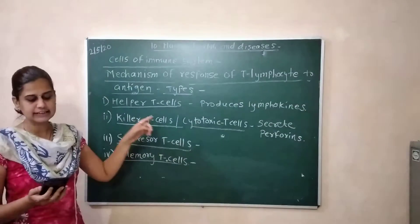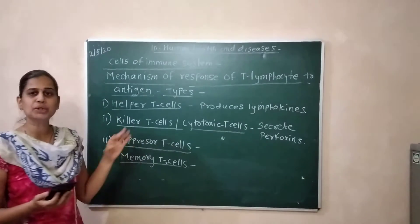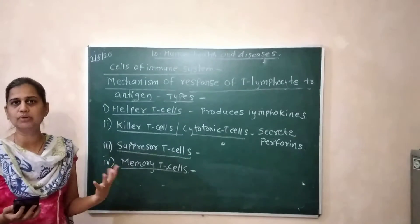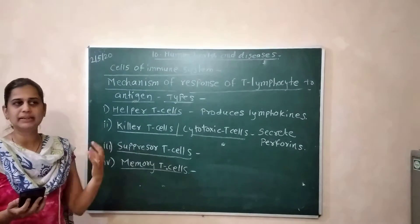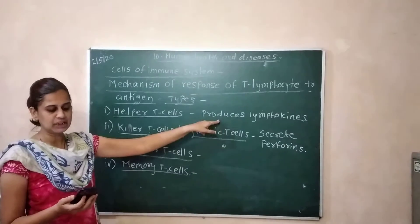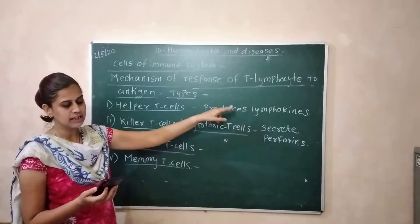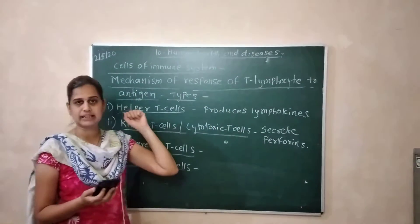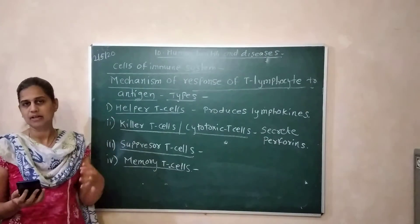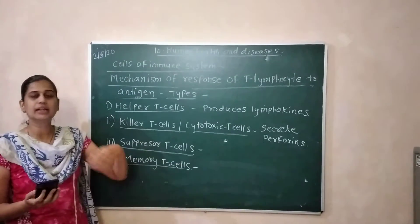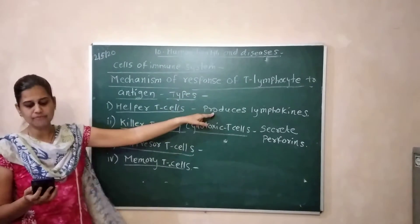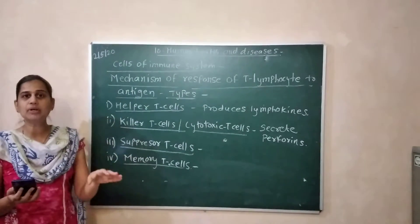For example, helper T-cells are responsible for the proliferation of T-cells. They also stimulate B-lymphocytes, increasing the number and activity of immune cells.